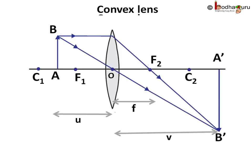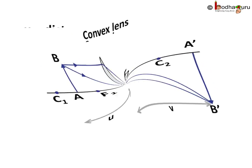Let us say the distance between optical center O and the image formed is OA'. This is called image distance and is denoted by V. We denote focal length of the lens by F.